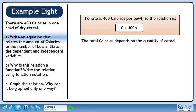The total calories depends on the quantity of cereal. C is the dependent variable. B is the independent variable.